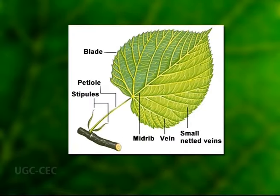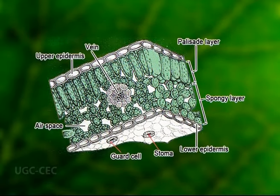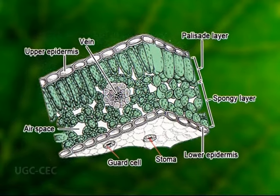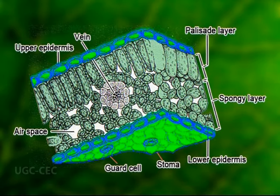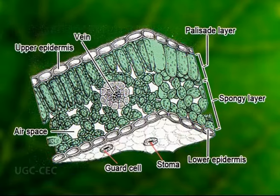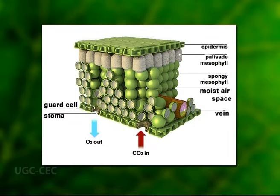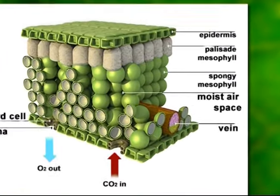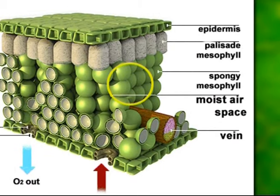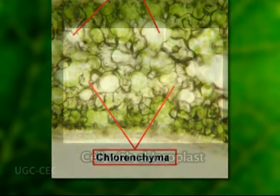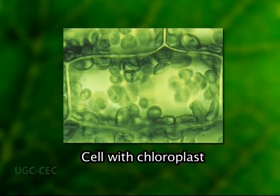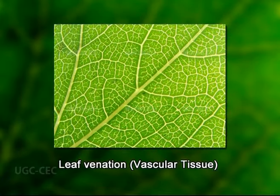A leaf is a plant organ and is made up of a collection of tissues in a regular organization. The major tissue systems present in a leaf are: the epidermis, that covers the upper and lower surfaces; the mesophyll inside the leaf, that is rich in chloroplasts; and the arrangement of veins — the vascular tissue.